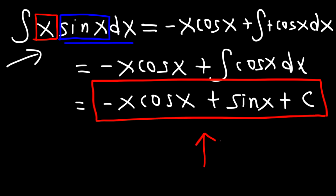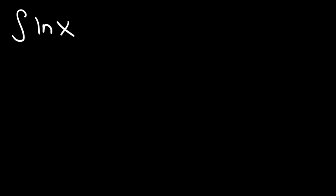So this is the answer: it's negative x cosine x plus sine x plus c. Now let's try another example using integration by parts. Find the antiderivative of the natural log of x times dx.